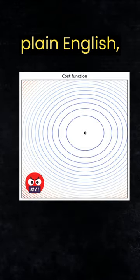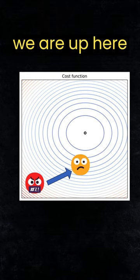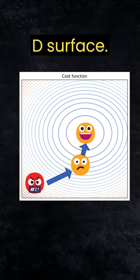What is stochastic gradient descent in plain English? It means that we are up here and we're trying to find the lowest point in this 3D surface.